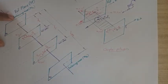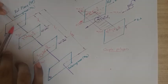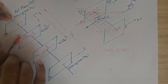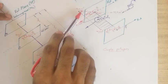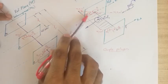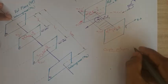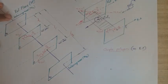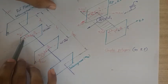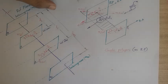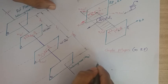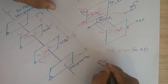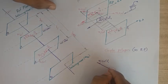For the graphical method, we construct a couple polygon with an origin on the reference plane. Transferring m1·r1·ω² gives a couple of m1·r1·l1 (omega squared can be factored out). The reference axis is the x-axis. The couple vector has length m1·r1·l1 and is drawn at angle theta 1 from the reference axis.